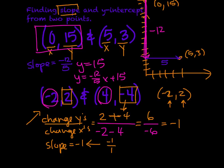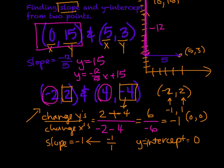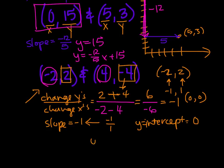This 2 equals a positive 1. We could also say that it then goes to 0, 0. So there is our y-intercept, which is 0. So our final equation for this particular problem would be y is equal to negative 1x plus 0.